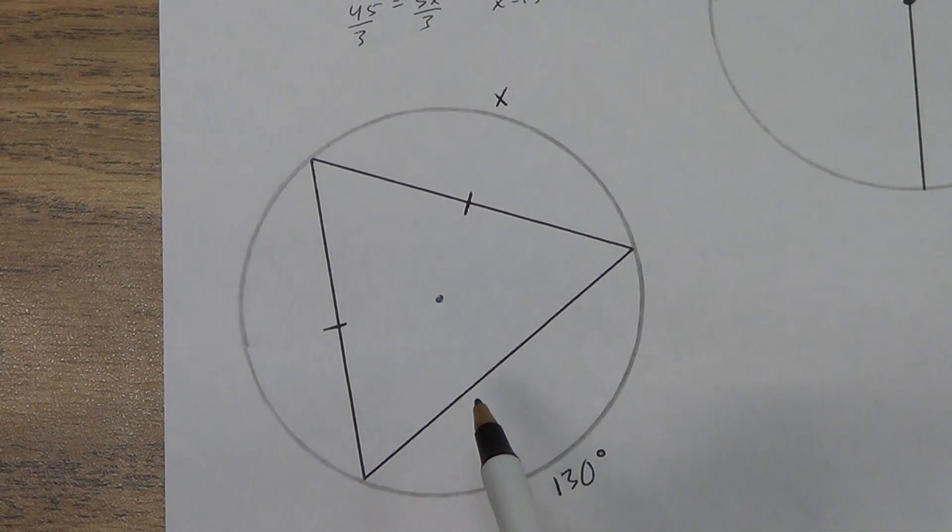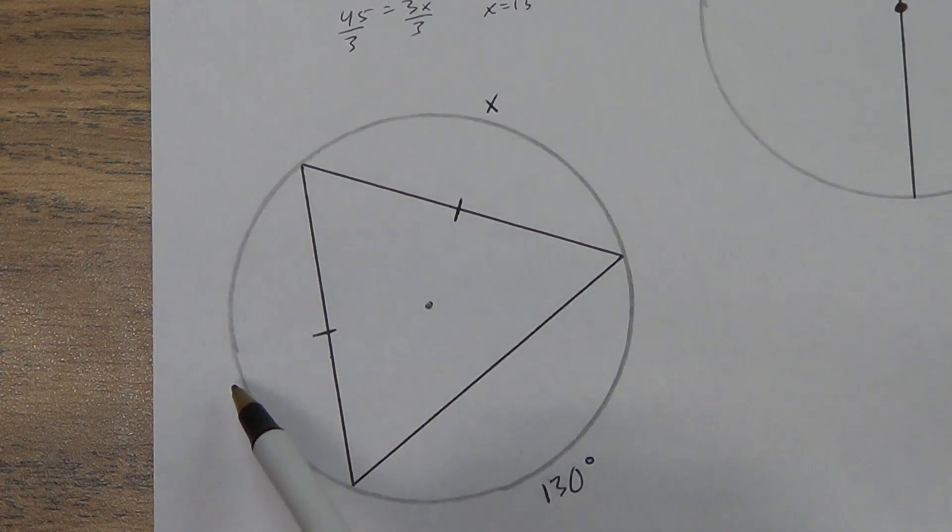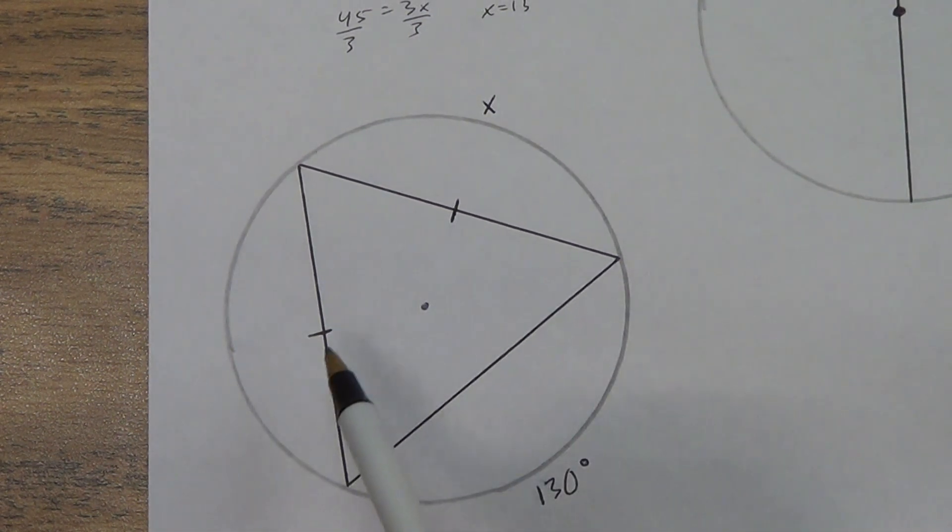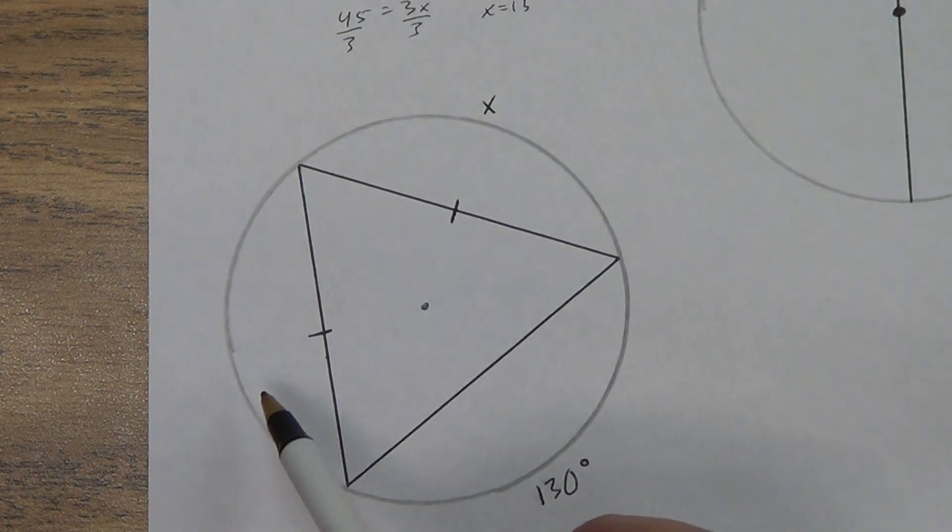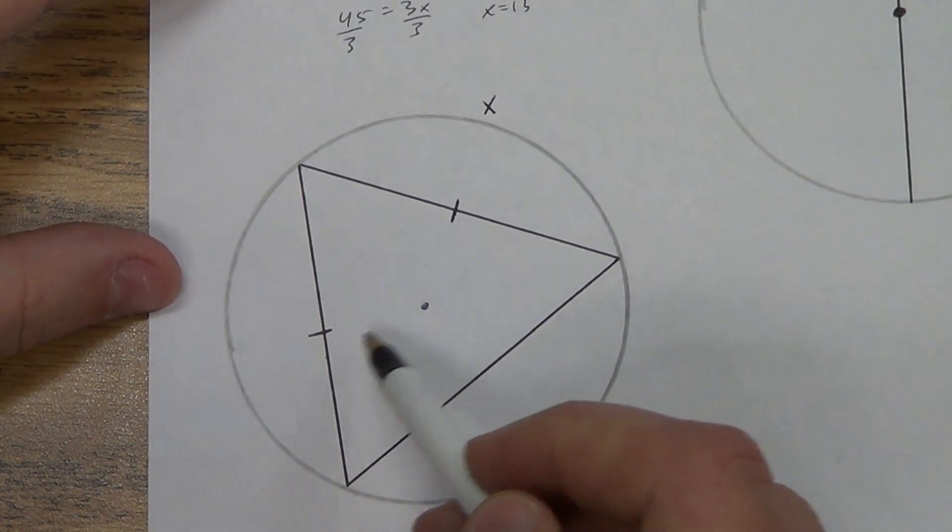So let's think about what theorem might apply. We know that if we've got congruent chords, then I also have to have congruent arcs. Remember that one? And that was one that worked both ways. If the arcs are congruent, then the chords are congruent. If the chords are congruent, then the arcs are congruent. Now we also had another one that said if the chords were congruent, they were the same perpendicular distance from the center point.